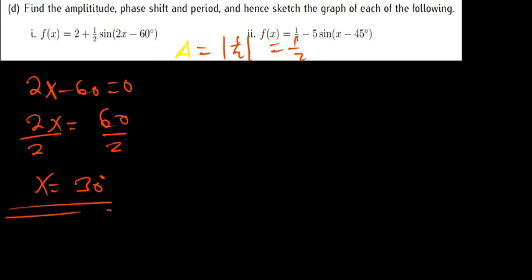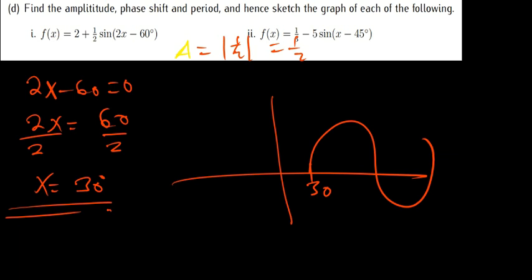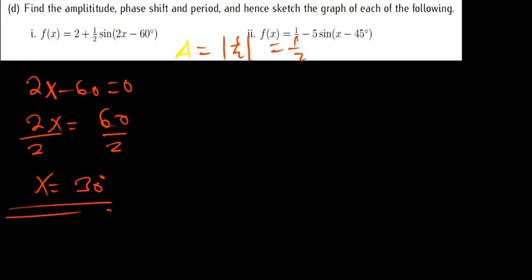That is where the graph is going to start from. If this is my −30, the graph will start from there — that is my phase shift. For the period, 2π over b, where b is the number in front of x. So in this case it is 2π over 2, which is π, approximately 1.8. The graph was supposed to end on 1.8, but because of the phase shift it shifts. Since they have used degrees, I'm going to use degrees as well, so I change π to 180 degrees.